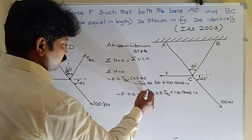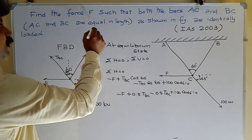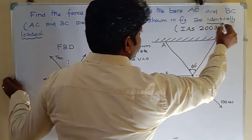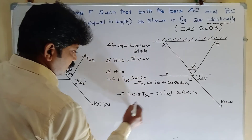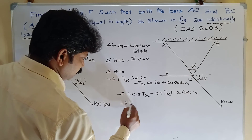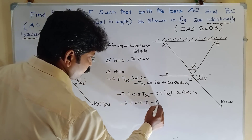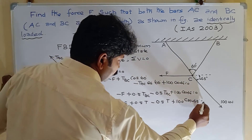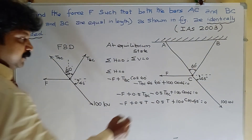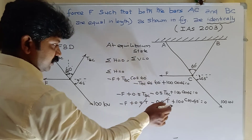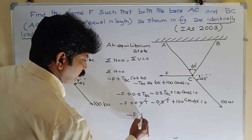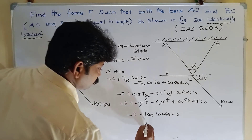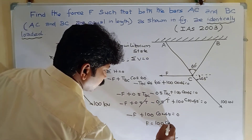This cancels because the two bars AC and BC are identically loaded, meaning TBC equals TAC equals T. So minus F plus 0.5 T minus 0.5 T plus 100 cos 45 equals 0. The 0.5 T terms cancel, leaving minus F plus 100 cos 45 equals 0, so F equals 100 cos 45.